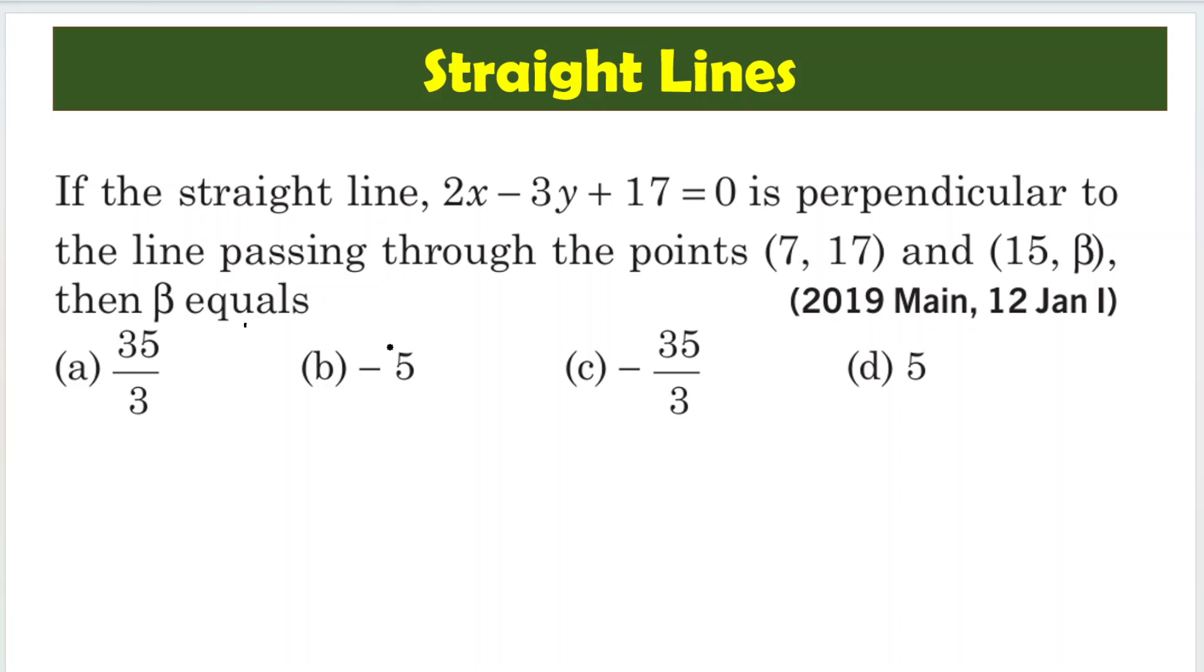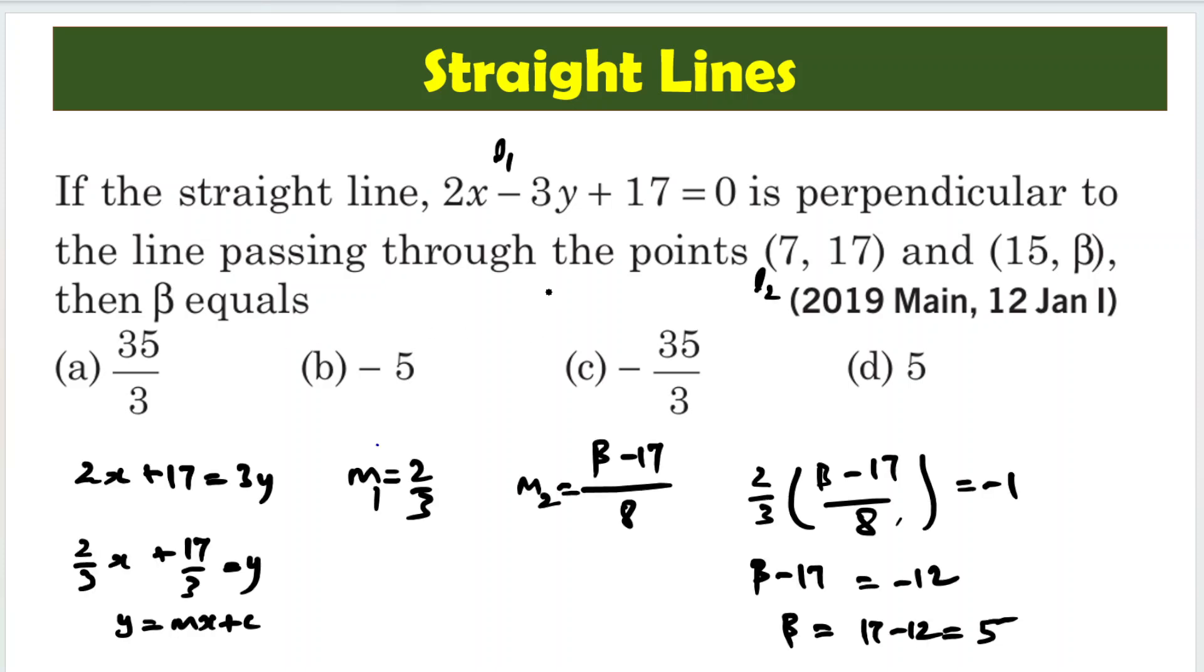The problem is very simple. We just need to calculate the slope of this line and slope of this line, and the product of these slopes should be equal to minus 1 because both the lines are perpendicular. Then we have to just find out what is beta.